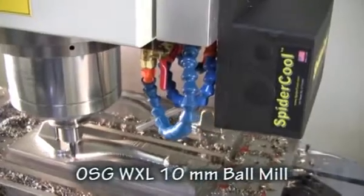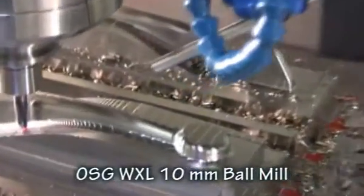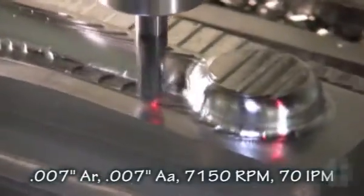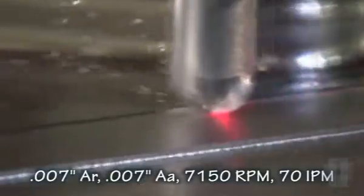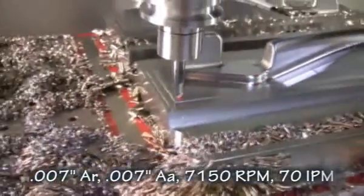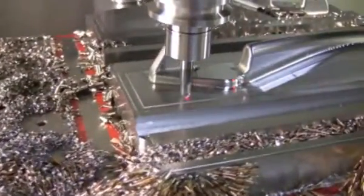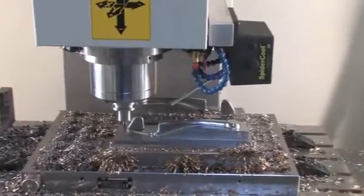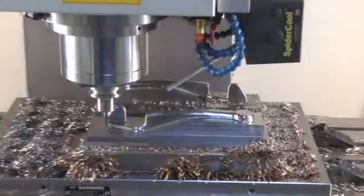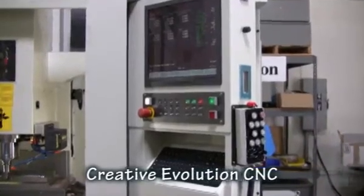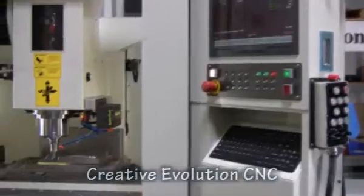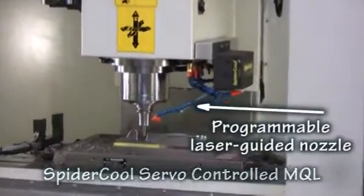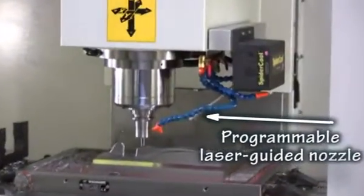OSG's new WXL coated ball mills are used to provide a beautiful finish with long cutter life. AccuLube MQL uses environmentally friendly vegetable oil and extreme pressure additives to extend cutter life while blowing chips clear of the cutting area. The SpyderCool programmable nozzle automatically learns the desired application direction for each tool as the operator guides its position just once.